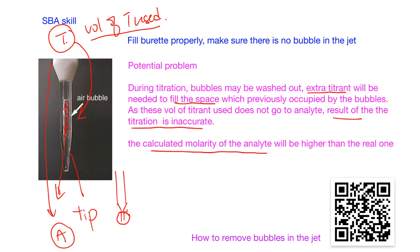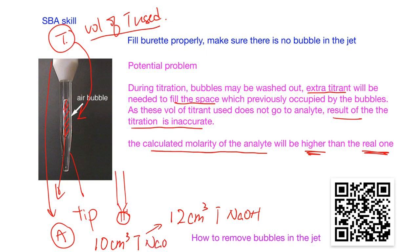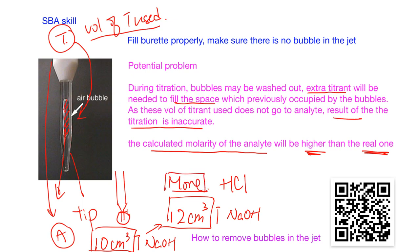So the results of the titration will be inaccurate — specifically, the calculated molarity of the analyte will be higher than the real one. For example, you may only need 10 cm³ of titrant to neutralize the analyte, but because some titrant fills the air bubble, it may appear that 12 cm³ of NaOH was needed. This makes it seem like there is more acid (HCl) in the analyte than there actually is. That's why we should not have any air bubbles in the jet.